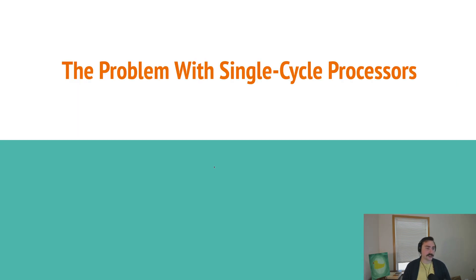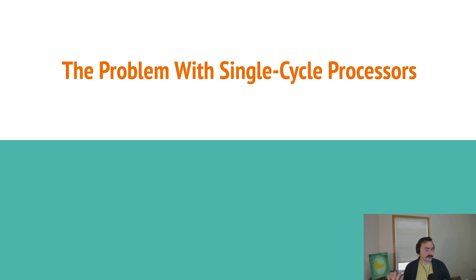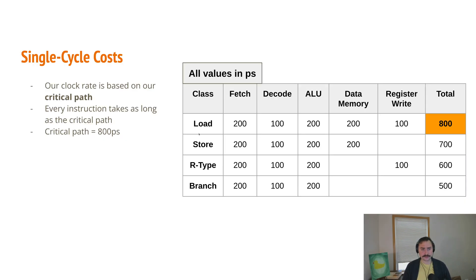One thing you may have noticed is that we don't really have single-cycle processors today. All of our processors are what we call multi-cycle, or more commonly called pipeline processors. So what exactly is the problem with a single-cycle processor? Why don't we use this design today? Let's take a look at some of the costs of single-cycle processors.